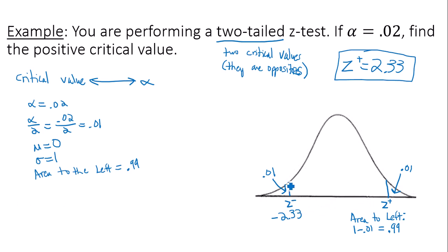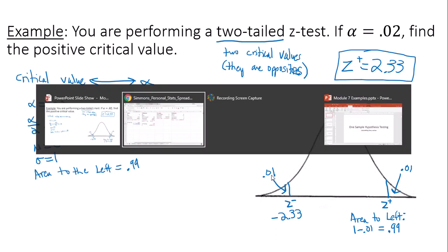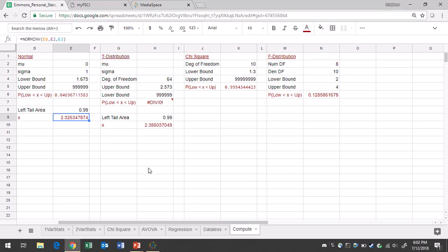Let's check this. The area to the left of my negative critical value is 0.01. In Google Sheets, let's change the area to the left to 0.01. And look what happens. Same answer, except now it's just the opposite with the negative sign.